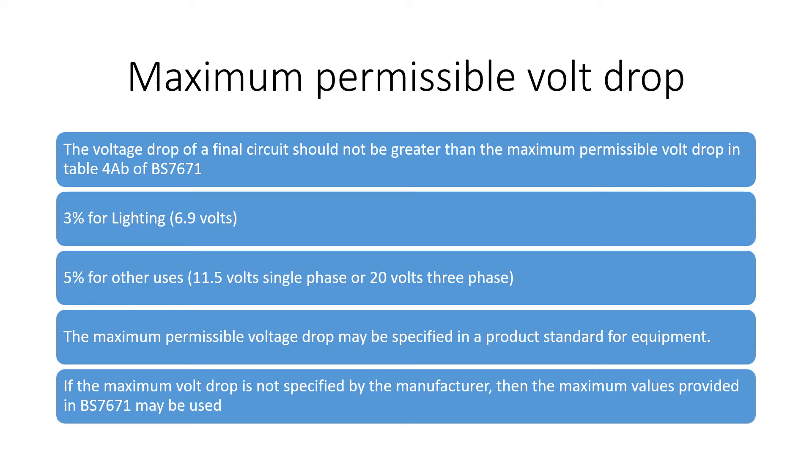I should also mention that Table 4AB specifies higher values for volt drop where low voltage installations are supplied from a private supply, for example where a large installation is supplied from a client's own transformer. However, the final circuit volt drop should still be within 3% and 5% respectively. So for the purposes of this example I'm going to assume that the electricity is supplied from a low voltage public supply.